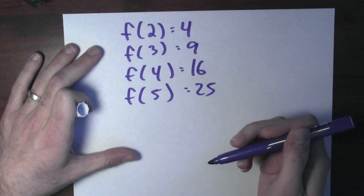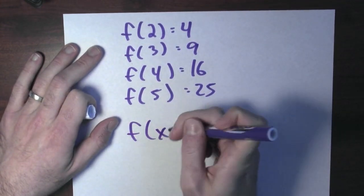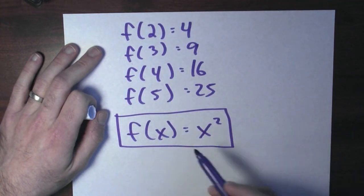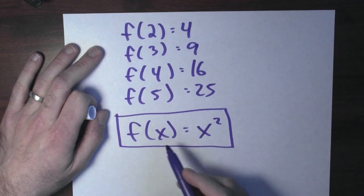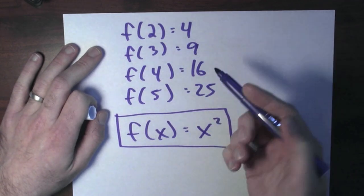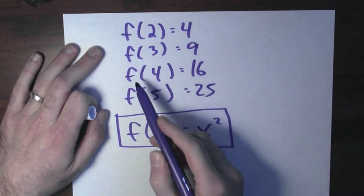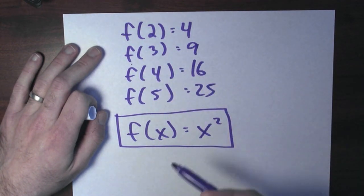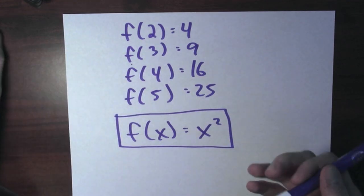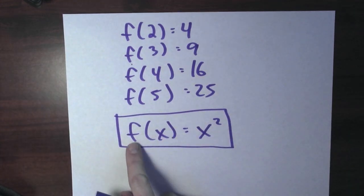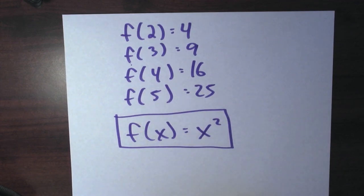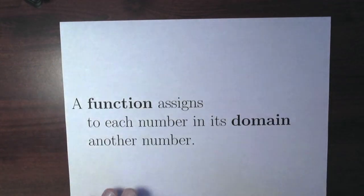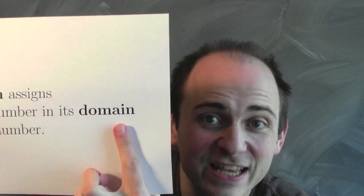I'm not just going to list off every single assignment that f makes. So instead, one way to talk about these assignments is to use a rule, like f of x equals x squared. This single rule explains how all of these assignments are made. This rule says that f assigns to the number x the number x squared. So in particular, f assigns to the number five, five squared, which is 25. Or f assigns to the number four, four squared, which is 16. Or f assigns to the number three, three squared, which is nine. A lot of times, when you want to talk about how these assignments are being made, you use a rule and write f of x is something to compute the output value.